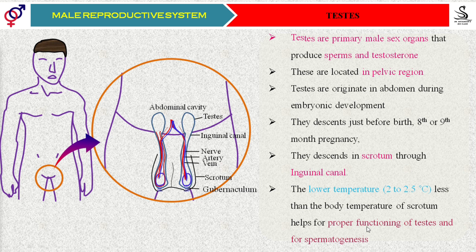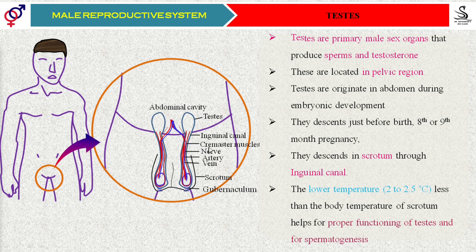In most individuals the testes descend into the scrotum and remain there. They get attached to the scrotum with the help of a ligament called the gubernaculum. Along with the blood vessels and nerves, we also find one more type of muscle here — those muscles are called cremaster muscles. We find the cremaster muscles on the inner side of the inguinal canal — there is a muscular layer there.